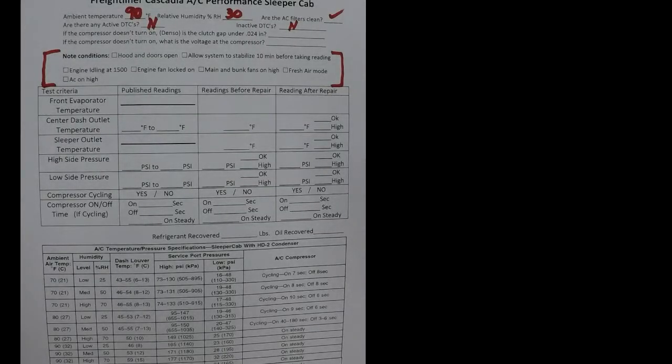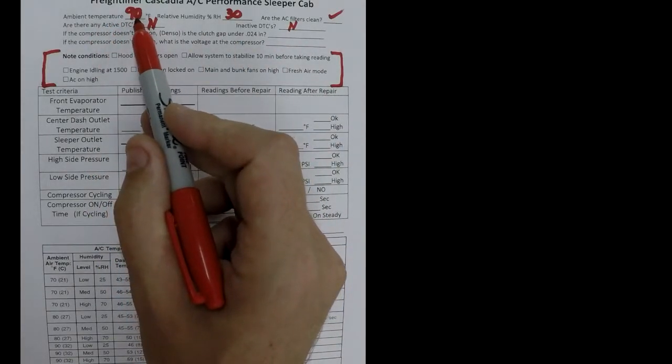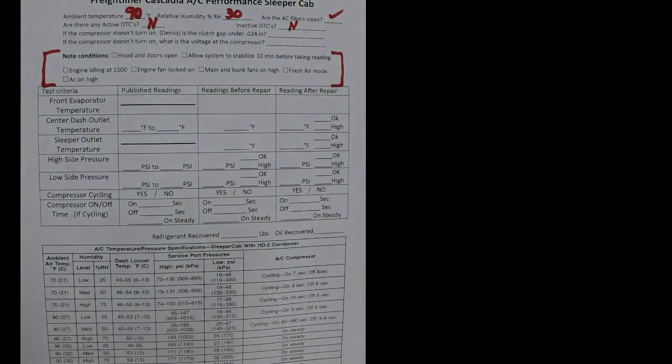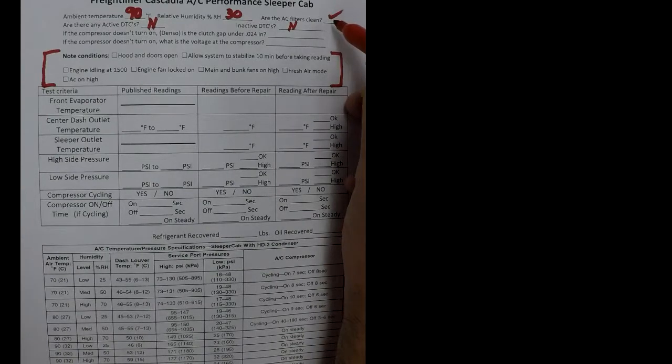All right, let me show you real quick how to fill out the AC performance sheet. At the top, it's asking you for your ambient temperature. So today is 90. And the humidity, the humidity I put for 30 here today. You can use a humidity probe or you can check the weather on your phone and get the local humidity, get you pretty close. All right, and then we got a checklist. Are the AC filters clean? Yep.